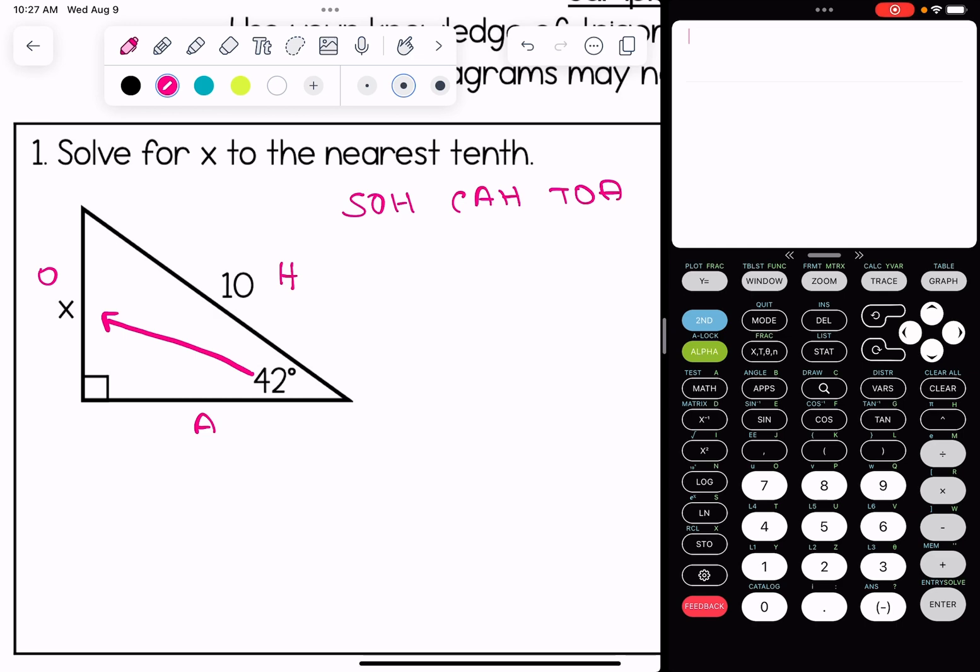Here's how I know which one to pick. Our variable is on the opposite side, and a value that we know, 10, is on the hypotenuse. Since we're using O and H, we are going to use sine.